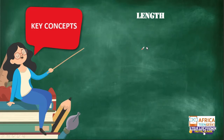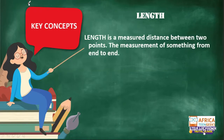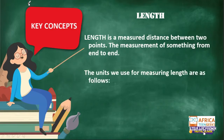Maybe it is a bit slow, so I'm going to keep going. If your answers come through a little bit later, I will just read them through for you guys. So — length is a measured distance between two points. The measurement of something from end to end. And when we talk about length or distance, there are a couple of units that we use to show the length or distance of something.